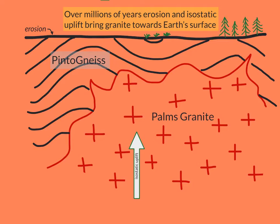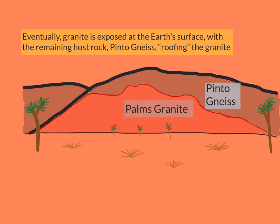Over time, the Palm's Granite was slowly brought to the Earth's surface through the processes of erosion and isostatic uplift. Eventually, the granite, as well as the overlying Pinto Gneiss, are exposed at the Earth's surface.